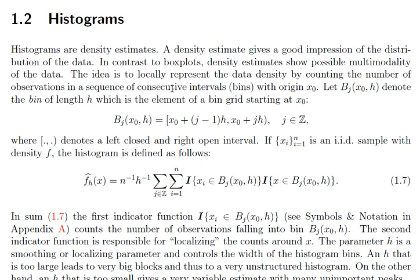Let us first try to understand exactly what we do in a histogram. You may not have drawn histograms manually during any of the courses you have learned in statistics, so you may not have realized exactly how histograms are created. Suppose x_i, that is x_1 to x_n, is the dataset. The histogram counts how many observations are there in a particular interval. For example, if the data varies from minus 3 to plus 3, as in a standard normal distribution, the histogram counts observations in intervals like minus 3 to minus 2.5, then minus 2.5 to minus 2, and so on.